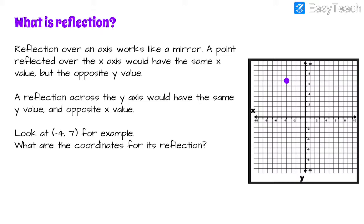If you were going to find the coordinates for its reflection over the x-axis — that's this line — we're going to reflect it over to the other side of the x-axis. So it would still have its x value of negative 4. We're still going to go to the left 4, but instead of going up 7 we're going to have the opposite y value and go down 7. So we'll be right there at negative 4, negative 7.